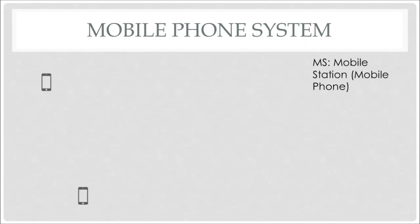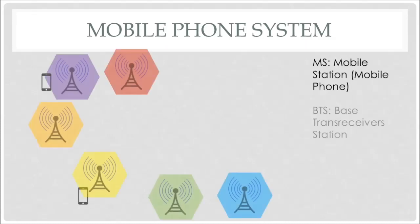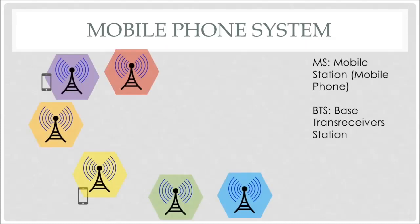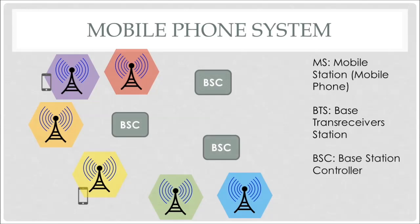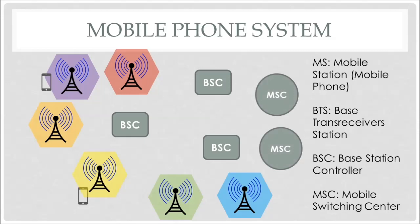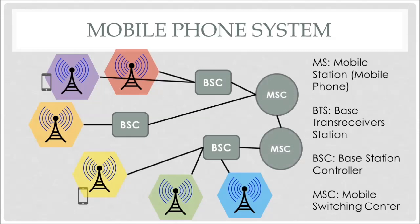The next concept is the mobile communication system, where the major components are: MS (mobile station) — the mobile phone; BTS (base transceiver station) — the antenna available in the cell; BSC (base station controller) — the controller for the antenna; and MSC (mobile switching center) — the master control of the entire system.